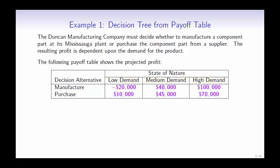So if the company were to manufacture the component when it is in high demand, the projected profit is $100,000. Show the order of decisions and outcomes using a decision tree.